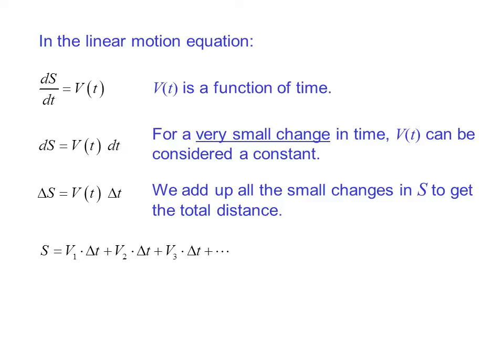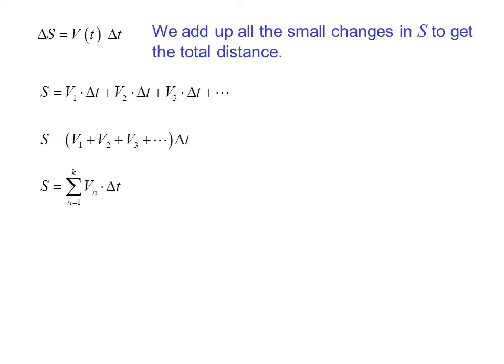So s equals v₁ times Δt plus v₂ times Δt plus v₃ times Δt and so forth. If we factor out the Δt, we could write this as the summation from n equals 1 to k of vₙ times Δt.